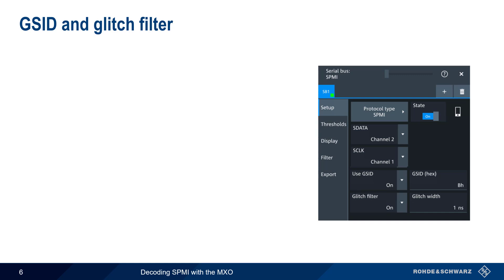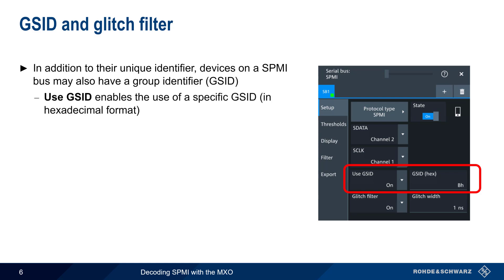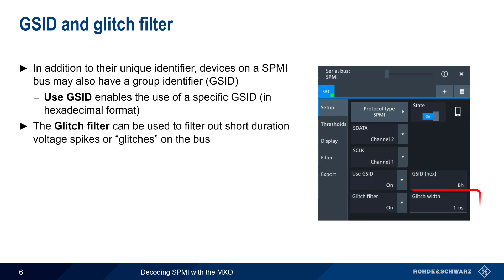There are two additional SPMI setup options. In addition to their unique identifiers, devices on an SPMI bus may also have a Shared Group Identifier, or GSID. If Use GSID is set to On, a specific GSID can be entered. The second option is a Glitch Filter, which can be used to filter out glitches or short-duration voltage spikes on the bus. The Glitch Width is also user-configurable.